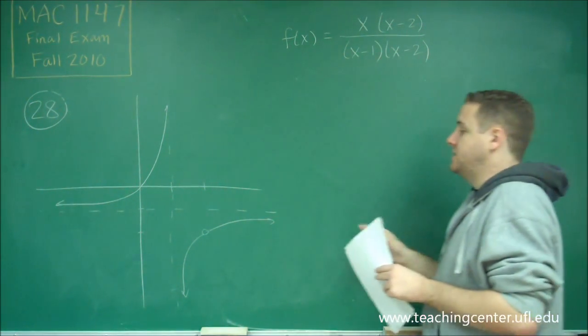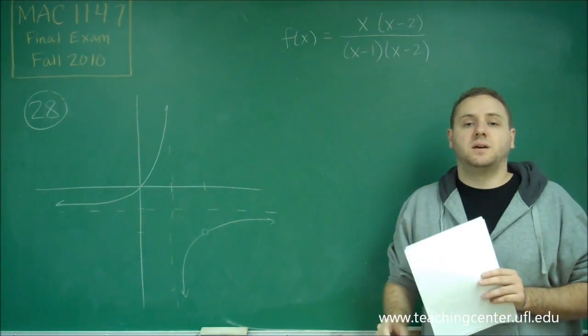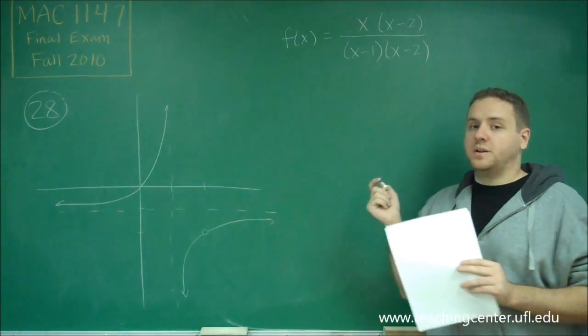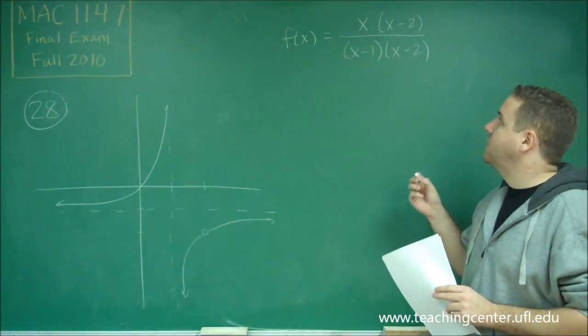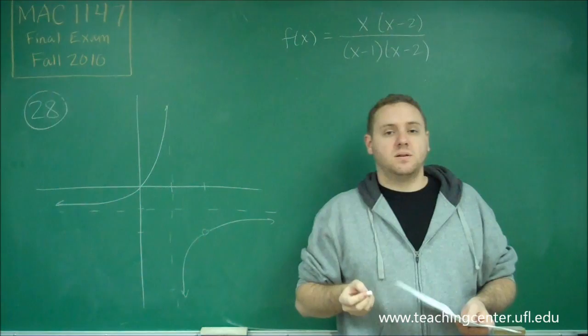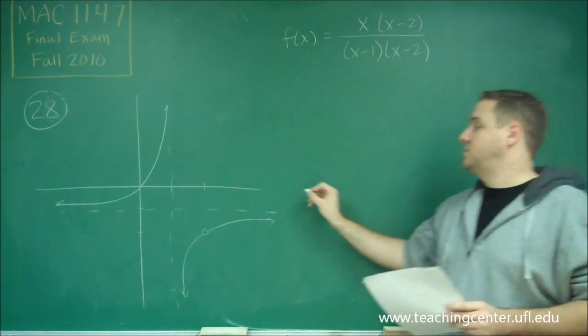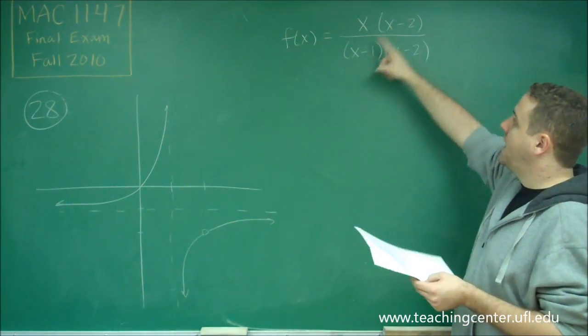So the last thing we need to take into account is that we have a horizontal asymptote. So remember that a horizontal asymptote tells you that your numerator and denominator, in this case, they're going to have the same degree, because if the numerator is bigger, we don't have a horizontal asymptote, and if the denominator is bigger, we have a horizontal asymptote at 0, which we don't have. So this must tell us that they're the same degree, and they are.